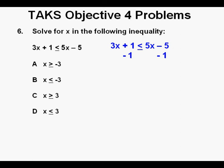So the first thing is to subtract 1 from both sides of the inequality. 1 minus 1 cancel on the left side. We bring down what's left and that is 3x is less than or equal to 5x minus 6. The next thing we'll do is subtract 5x from both sides of the inequality.